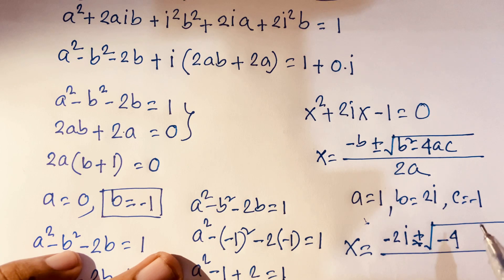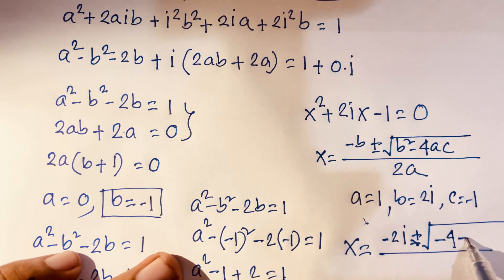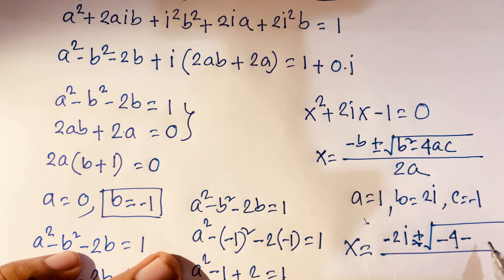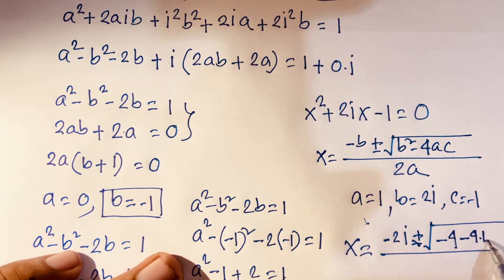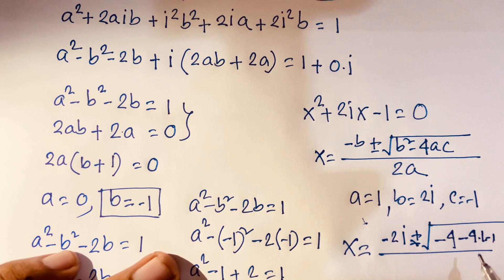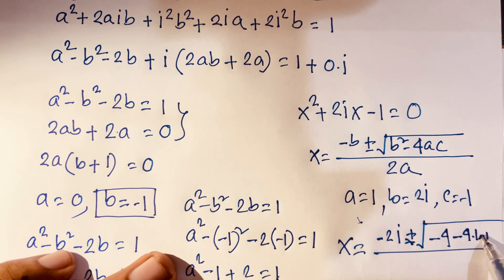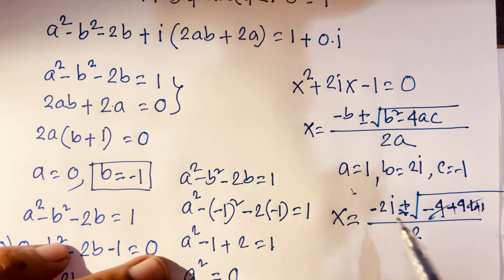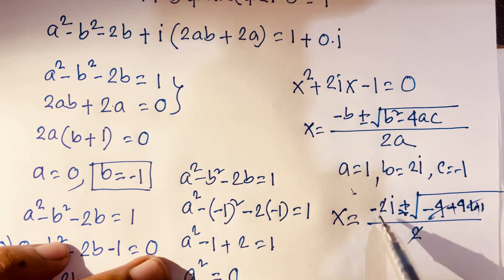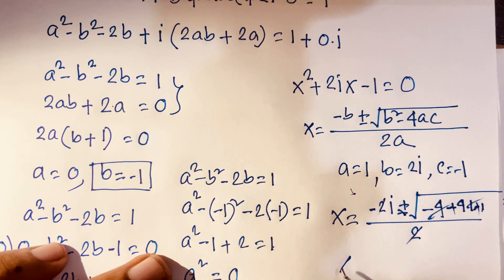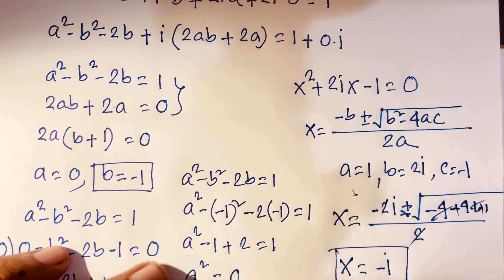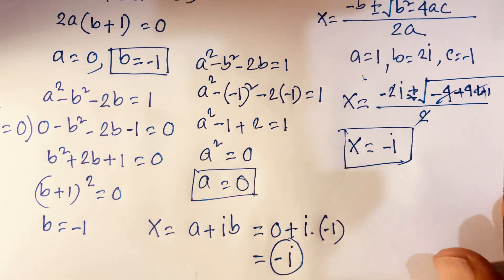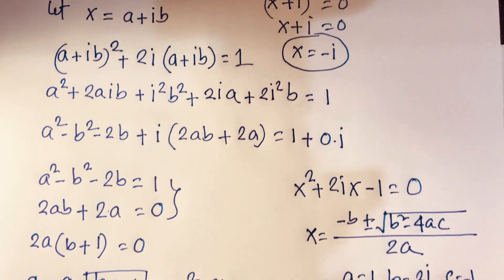Inside the square root: −4 − 4(1)(−1) = −4 + 4 = 0. So x = −2i / 2 = −i. Therefore x = −i is our final answer. Thank you all — if you enjoyed this video please subscribe to my channel and like this video. Goodbye.